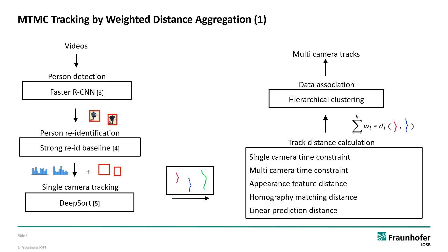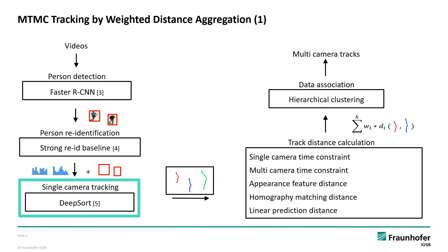After that, appearance feature vectors for every detected person tracking patch are calculated using a person re-identification approach. Then, single camera tracking is performed using the appearance feature vectors and person detections. This is done to reduce the complexity and to be able to proceed with working on single camera tracks.